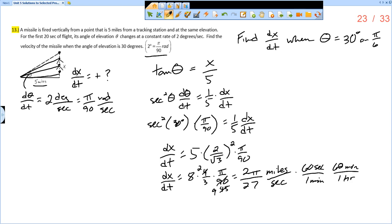And so if you multiply 2 pi over 27 by 60 by 60, then you get a kind of a better idea. So 2 pi times 60 times 60 and then divided by 27. And that is going to get us approximately 837.758 miles per hour, which is a totally reasonable velocity for a rocket to be traveling. Or a missile. So that is it.